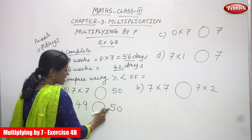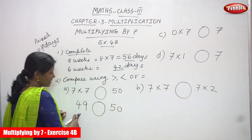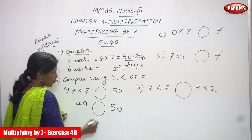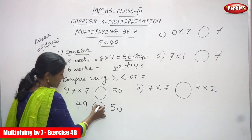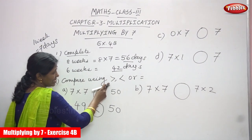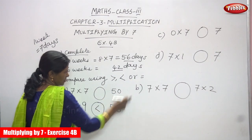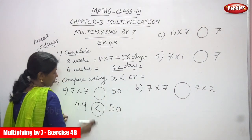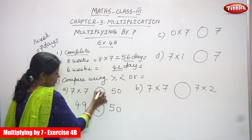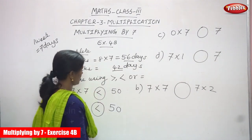49 is less than 50 — you know that very clearly. So you must use the less-than sign. This is greater, this is lesser, and this is equal. So 49 is less than 50, and the sign is the less-than sign. You have to write it.